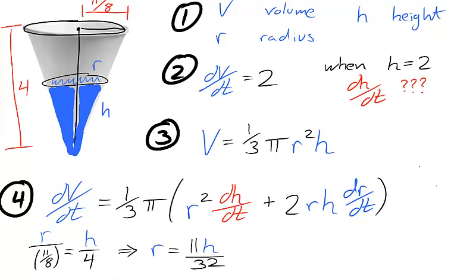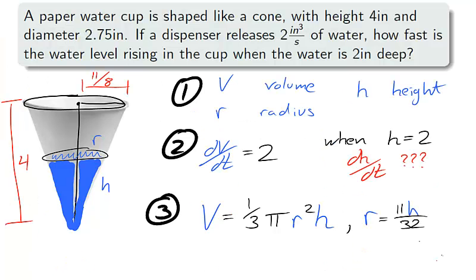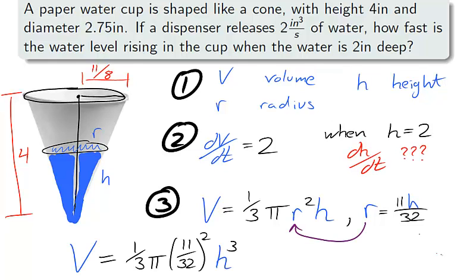We can use this similarity to find the relation r over 11/8 is equal to h over 4. Cleaning that up, we obtain r is equal to 11/32 times h. This relation really belonged in step 3. Before moving to step 4, we can remove the variable r from our main equation, so our main equation no longer has r in it.